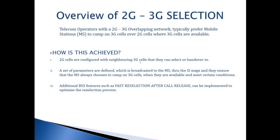So how is this achieved? The 2G cells are configured with 3G neighboring cells which they can select or hand over to. A set of parameters is defined which are transmitted through system information messages — the SI messages — to the mobile stations. These SI messages help the mobile stations to decide when, how, and if to camp on a 3G cell. We also have additional BSS features such as fast reselection after call release, which helps to optimize and make the reselection faster.